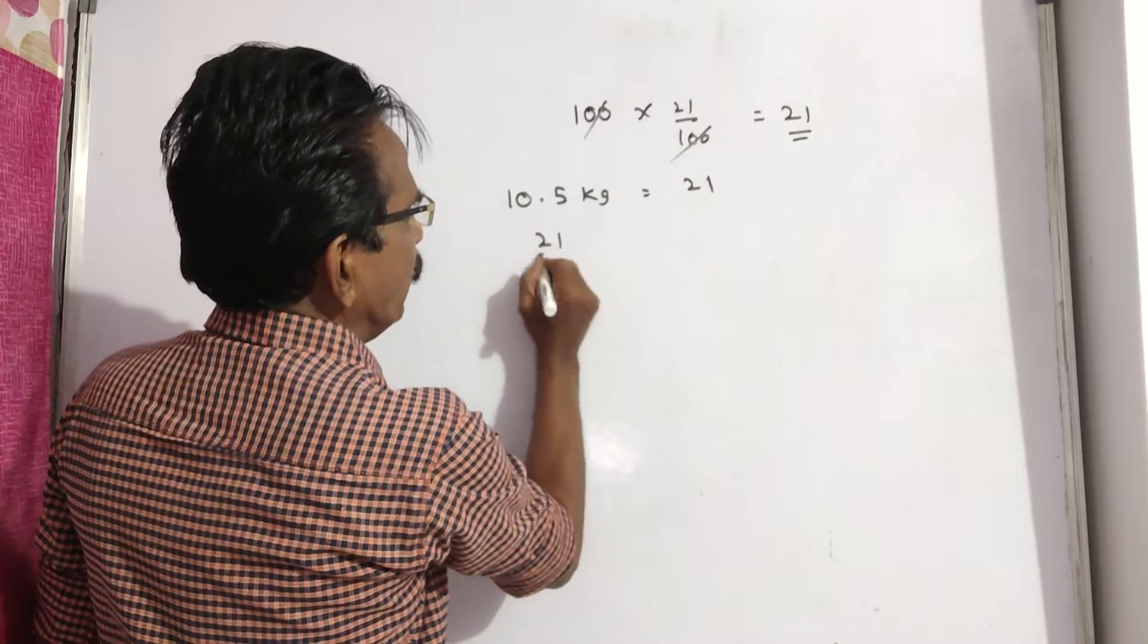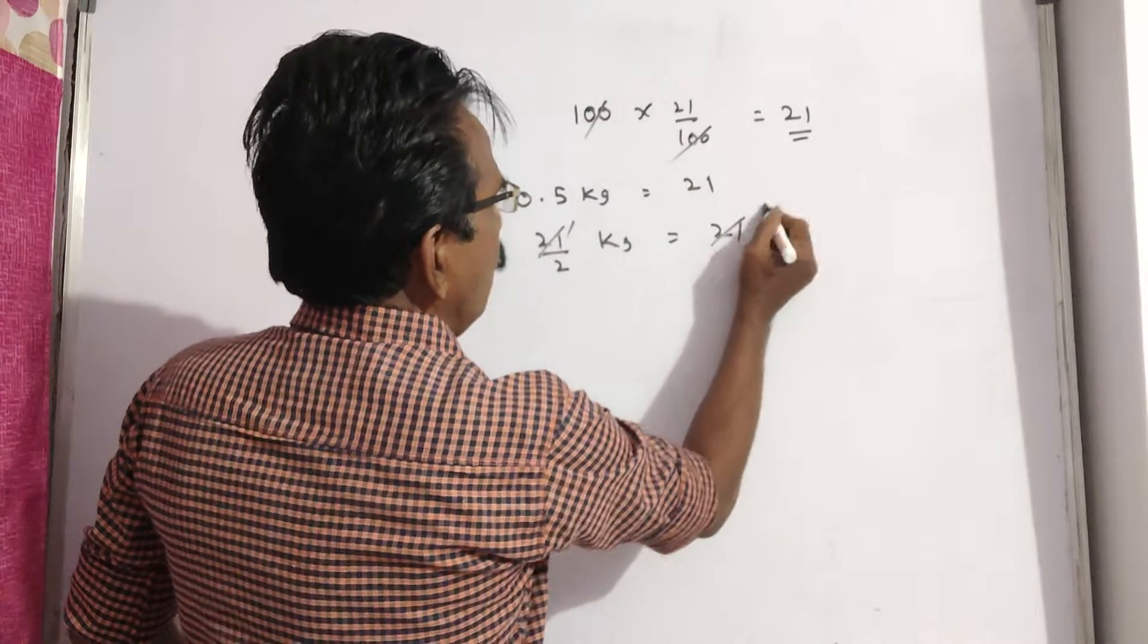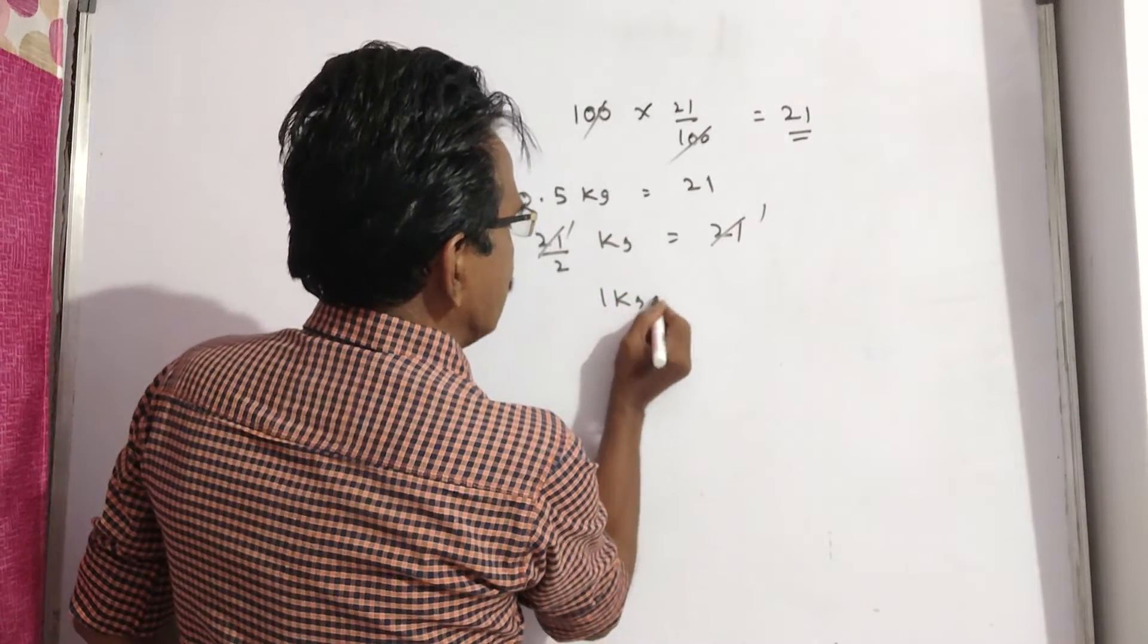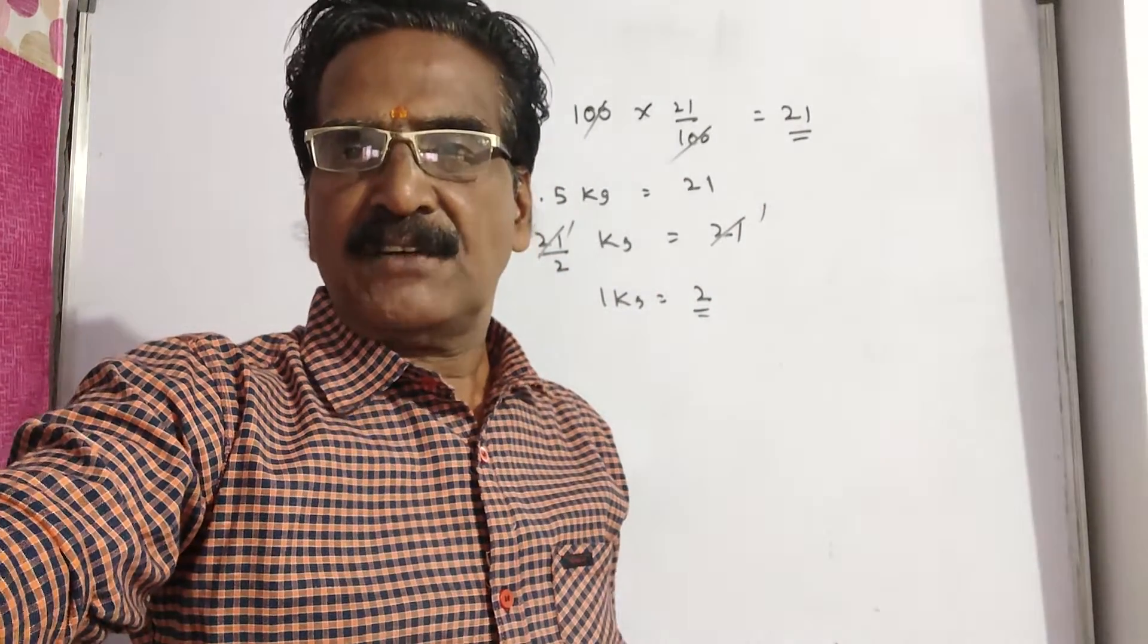10.5 means 21 by 2. 21 by 2 kg is equal to 21. So, 1 kg is equal to 2 into 1, Rs. 2. That is your answer, friends. Okay friends, thank you.